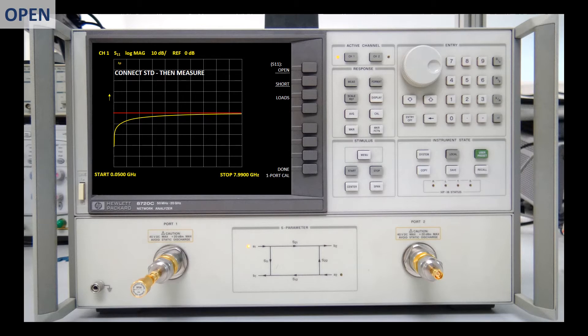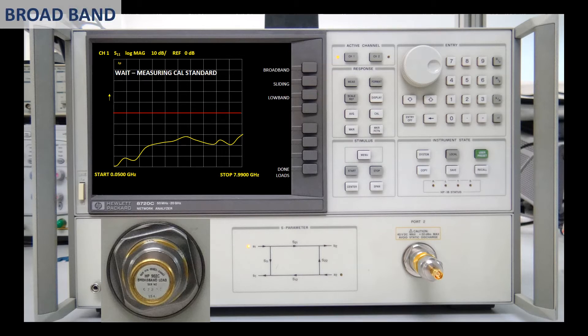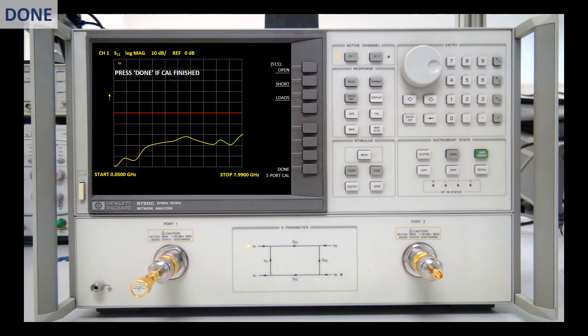The last one is the matched load. We connect it and press Loads, and then Broadband. This standard is called broadband load to distinguish it from other standards that work in narrower frequency bands. The measurement has finished. We press Done. Now all the labels are underlined.